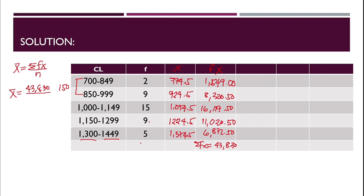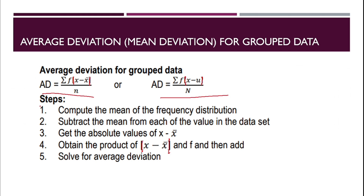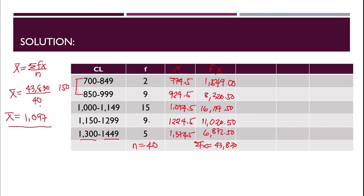Substituting into the formula, the mean equals 43,830 divided by n equals 1097. So the mean is 1097. That completes the first step — computing the mean of the frequency distribution. Next step is to subtract the mean from each value in the data set, computing x minus x-bar.